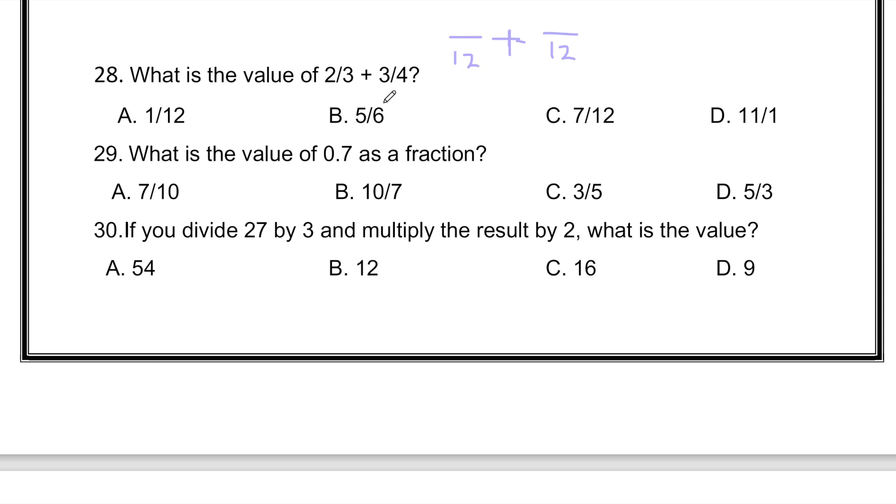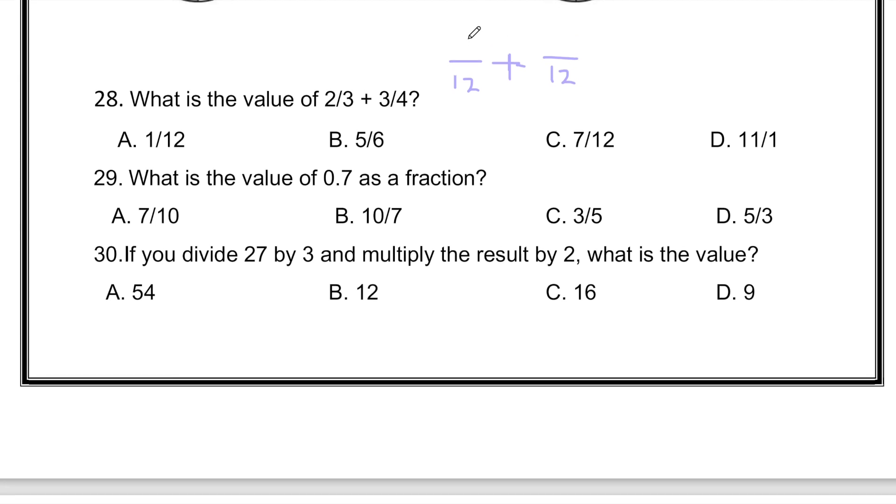So 3 fours are 12 and 4 threes are 12. So basically 2 fours are 8, meaning 8 will come on the top. And 3 times 3 equals to 9.